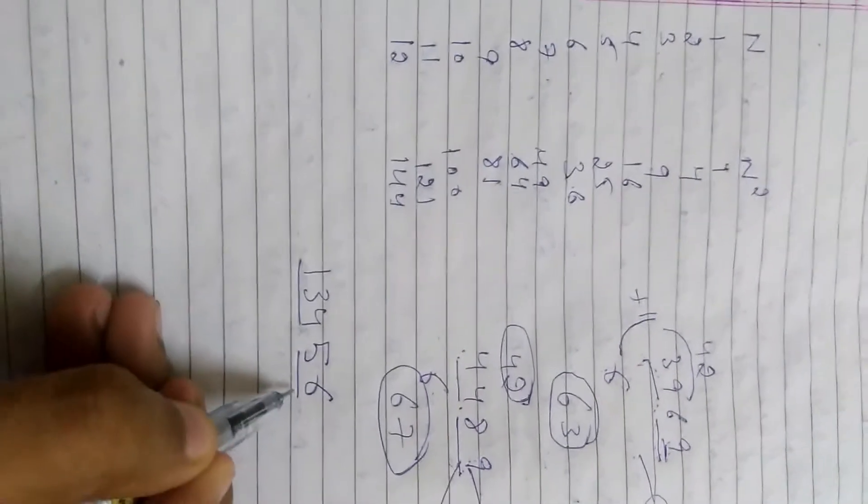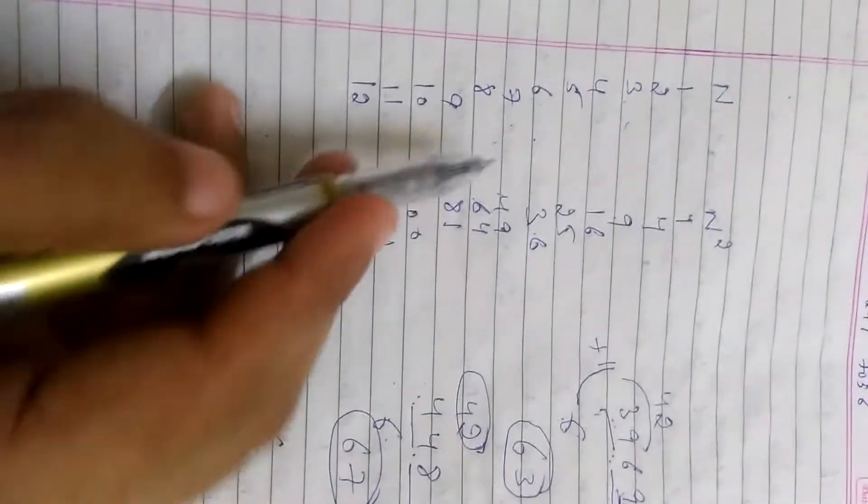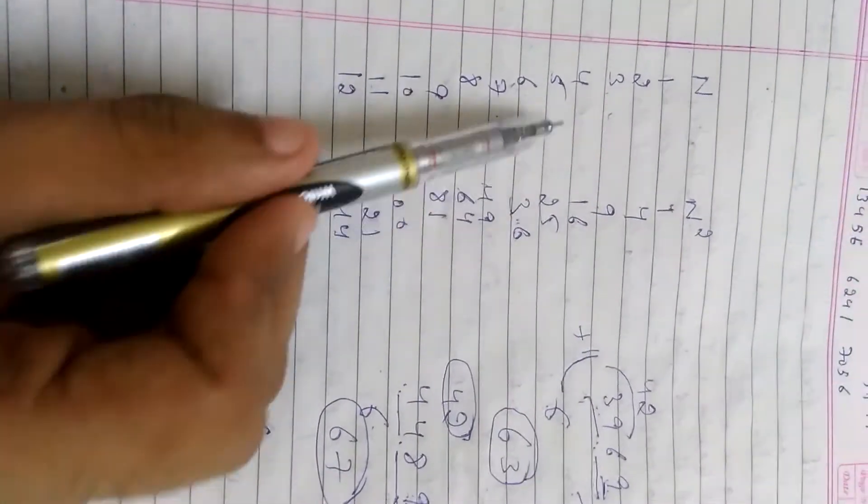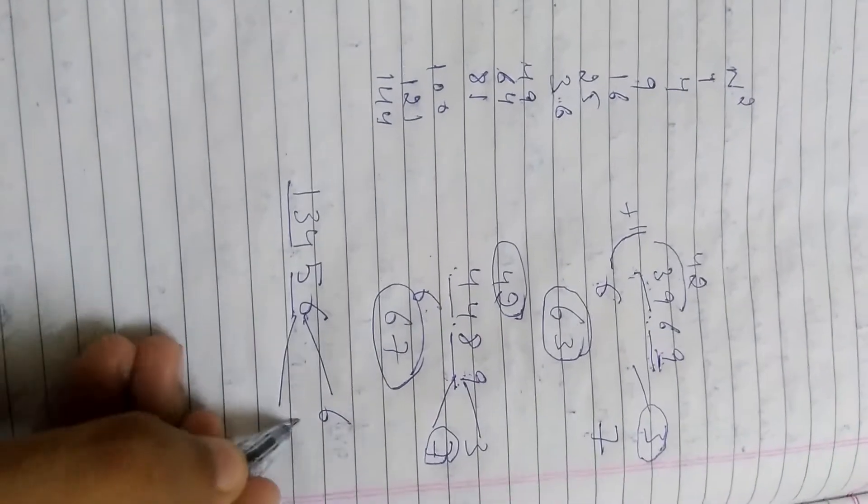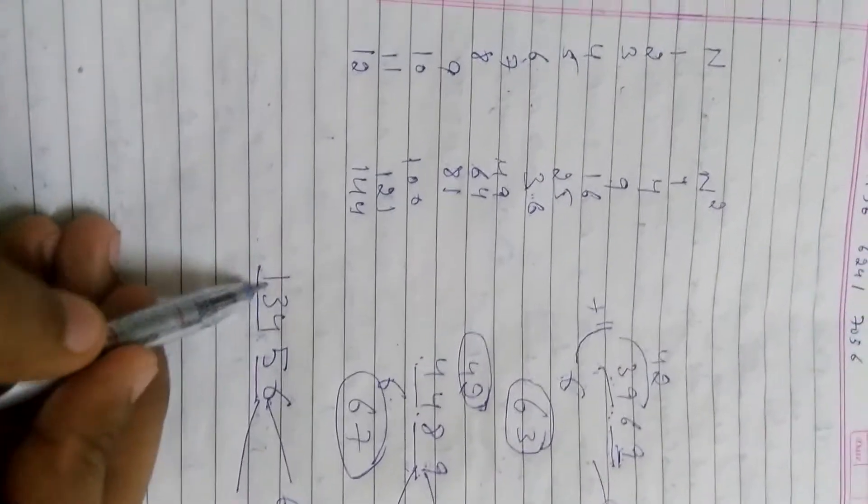Again we divide the number into two parts. The last digit is 6. The last digit 6 means 6 or 4. 134 lies between 11 and 12 square.